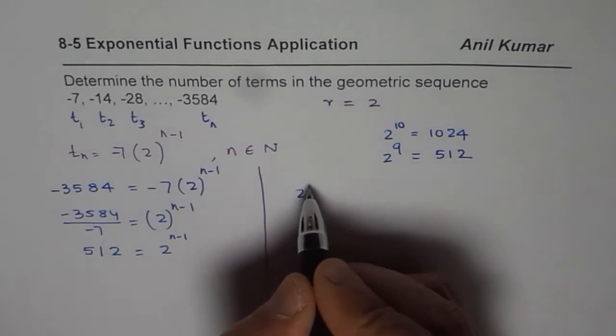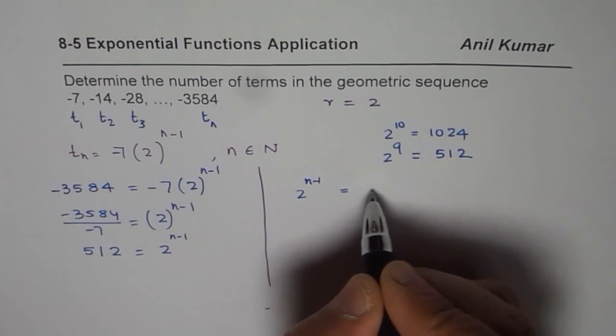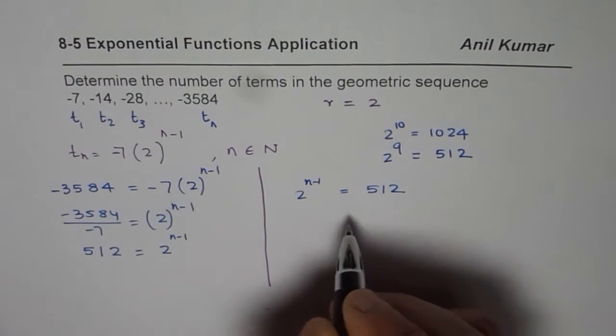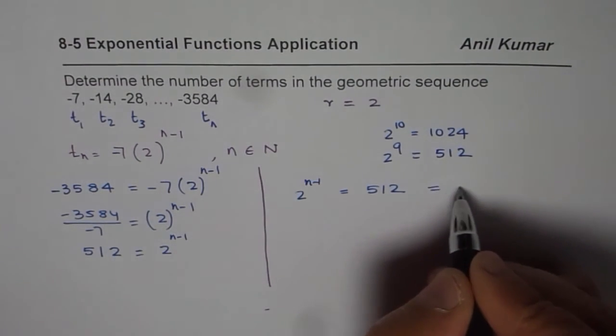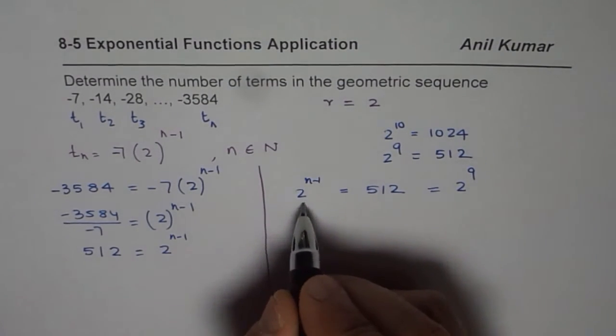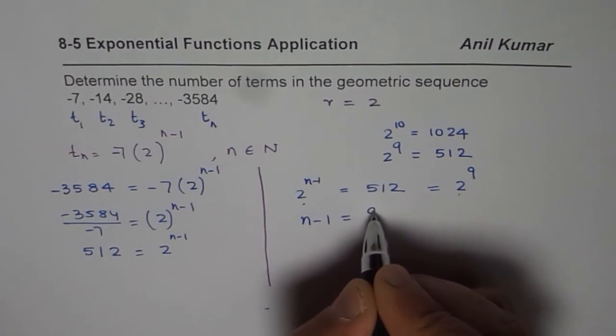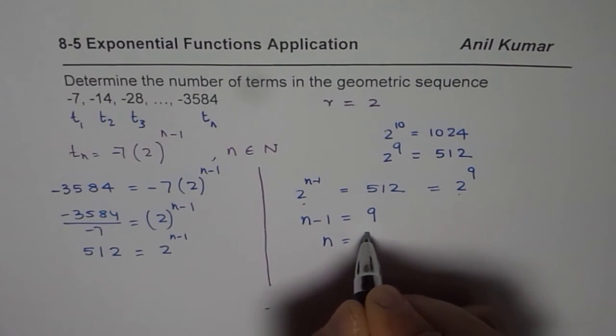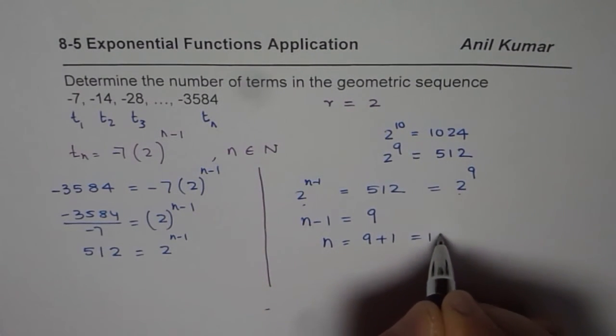So we have 2 to the power of n minus 1 equals 512. As you can see, 512 can be written as 2 to the power of 9. Once we have the same base, we can say n minus 1 equals 9. So n equals 9 plus 1, which is 10.